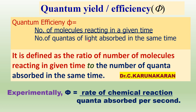Suppose one photon of light is absorbed and 100 molecules reacted, then phi equals 100. Therefore, quantum efficiency is defined as the ratio of the number of molecules reacting in a given time to the number of photons of light absorbed in the same time. Experimentally, how is quantum efficiency determined? It is obtained from the rate of the chemical reaction and how much light energy is absorbed per second.